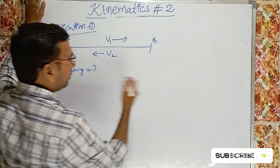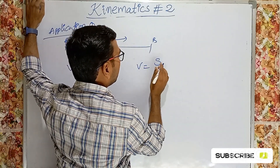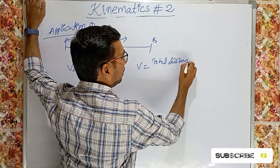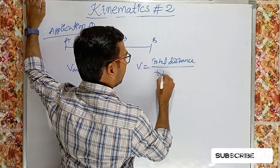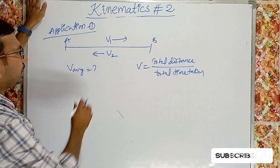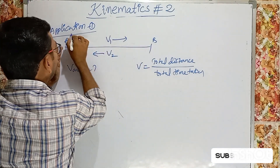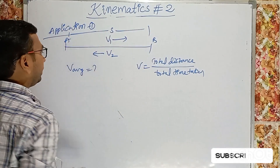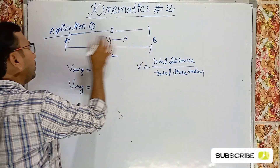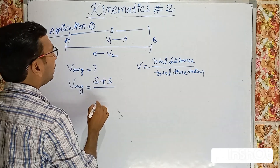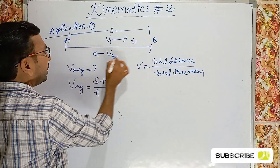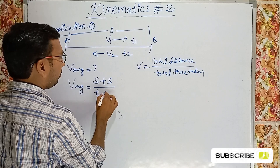Average speed formula: V_average = total distance / total time taken. Let A to B distance = S, so B to A distance is also S. Total distance = S + S = 2S. Time T1 = S/V1 (A to B), and T2 = S/V2 (B to A). So V_average = 2S / (S/V1 + S/V2).